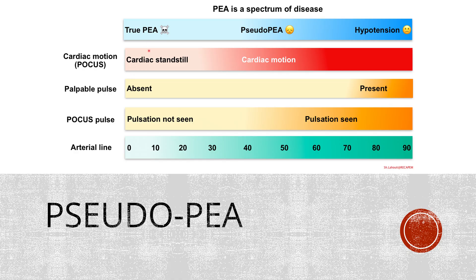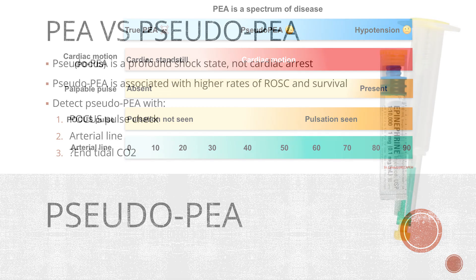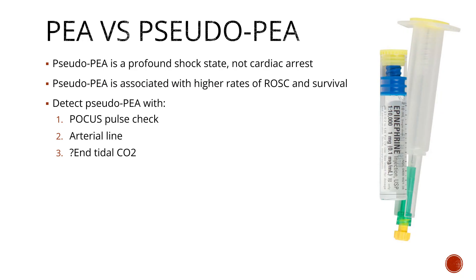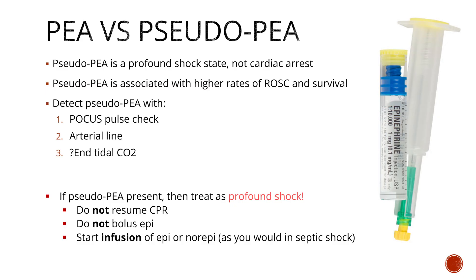True PEA is cardiac arrest with dismal outcomes — you'll provide CPR and bolus epinephrine to restart the heart — whereas pseudo-PEA is more of a severe shock state with some cardiac output; it's not true cardiac arrest, and CPR with bolus epinephrine may be harmful. To summarize: pseudo-PEA is a profound shock state, not actually cardiac arrest; pseudo-PEA versus true PEA is associated with higher rates of ROSC and survival. To detect pseudo-PEA you must use a POCUS pulse check or an arterial line. If pseudo-PEA is present, treat it as profound shock: don't resume CPR, don't bolus epinephrine — start an epinephrine or norepinephrine infusion as you would with profound septic shock.